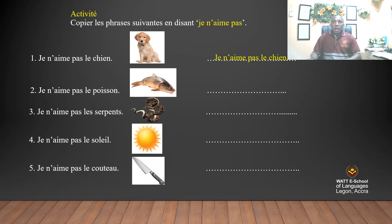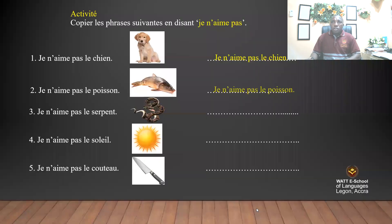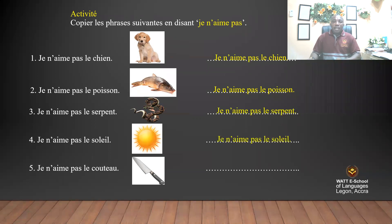Je n'aime pas le chien — I don't like dog. Je n'aime pas le poisson — I don't like fish. Je n'aime pas le serpent — I don't like snake. Je n'aime pas le soleil — I don't like sun. Je n'aime pas le couteau — I don't like knife.